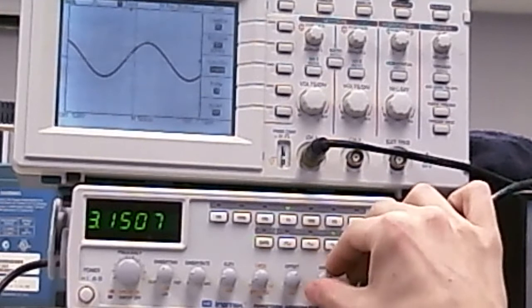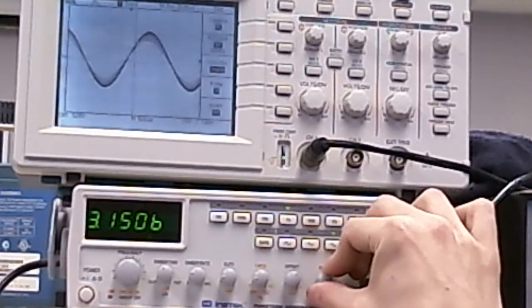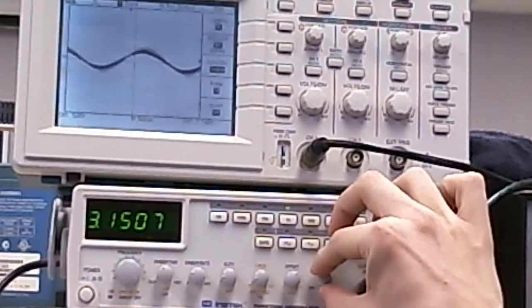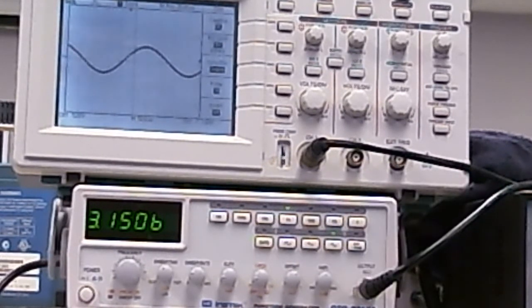Finally, the amplitude is this knob on the right. As you move to the very right, the amplitude gets big, and as you move to the left, the amplitude gets small. And that's how to use a function generator.